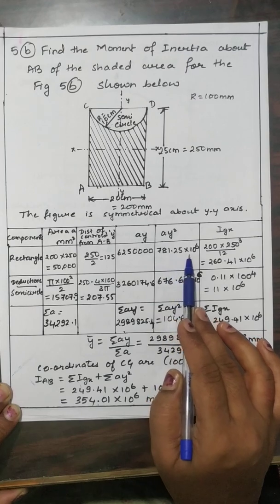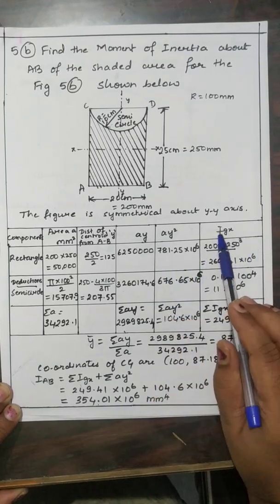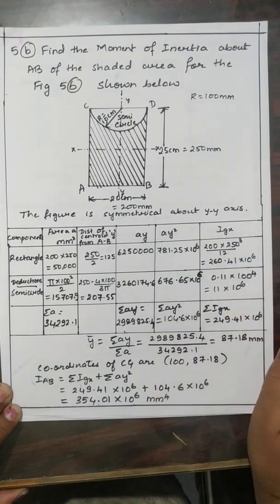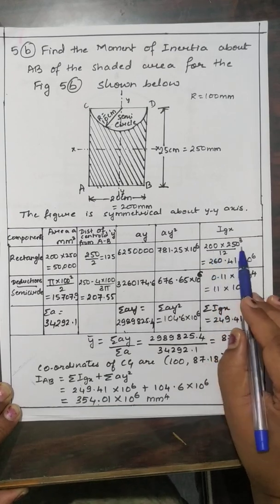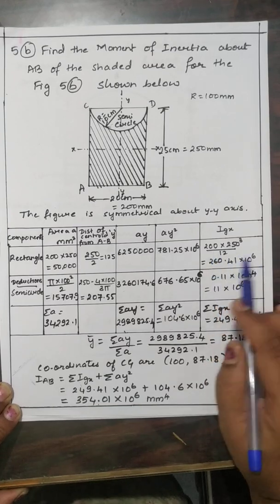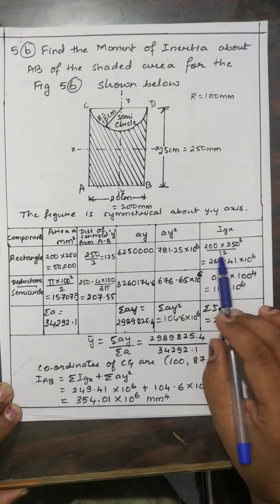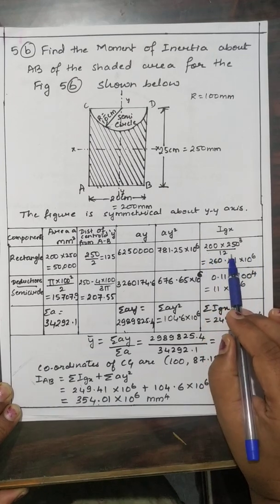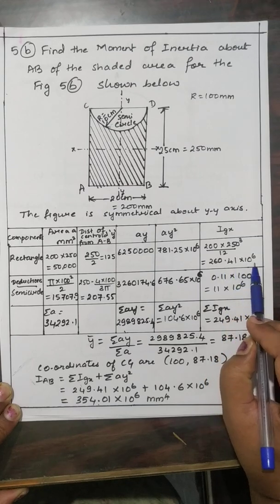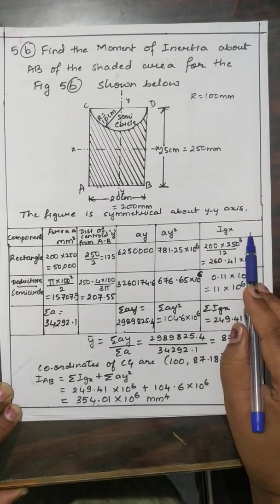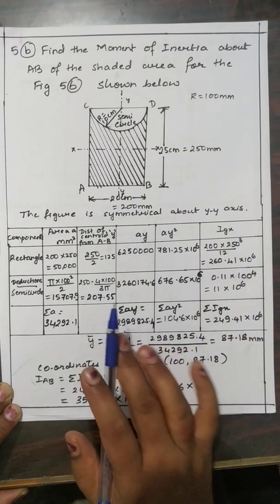For the rectangle, A·Y² = 781.25 × 10⁶. The IGX value for a rectangle is BD³/12, so 200 × 250³ / 12 = 260.41 × 10⁶ mm⁴.